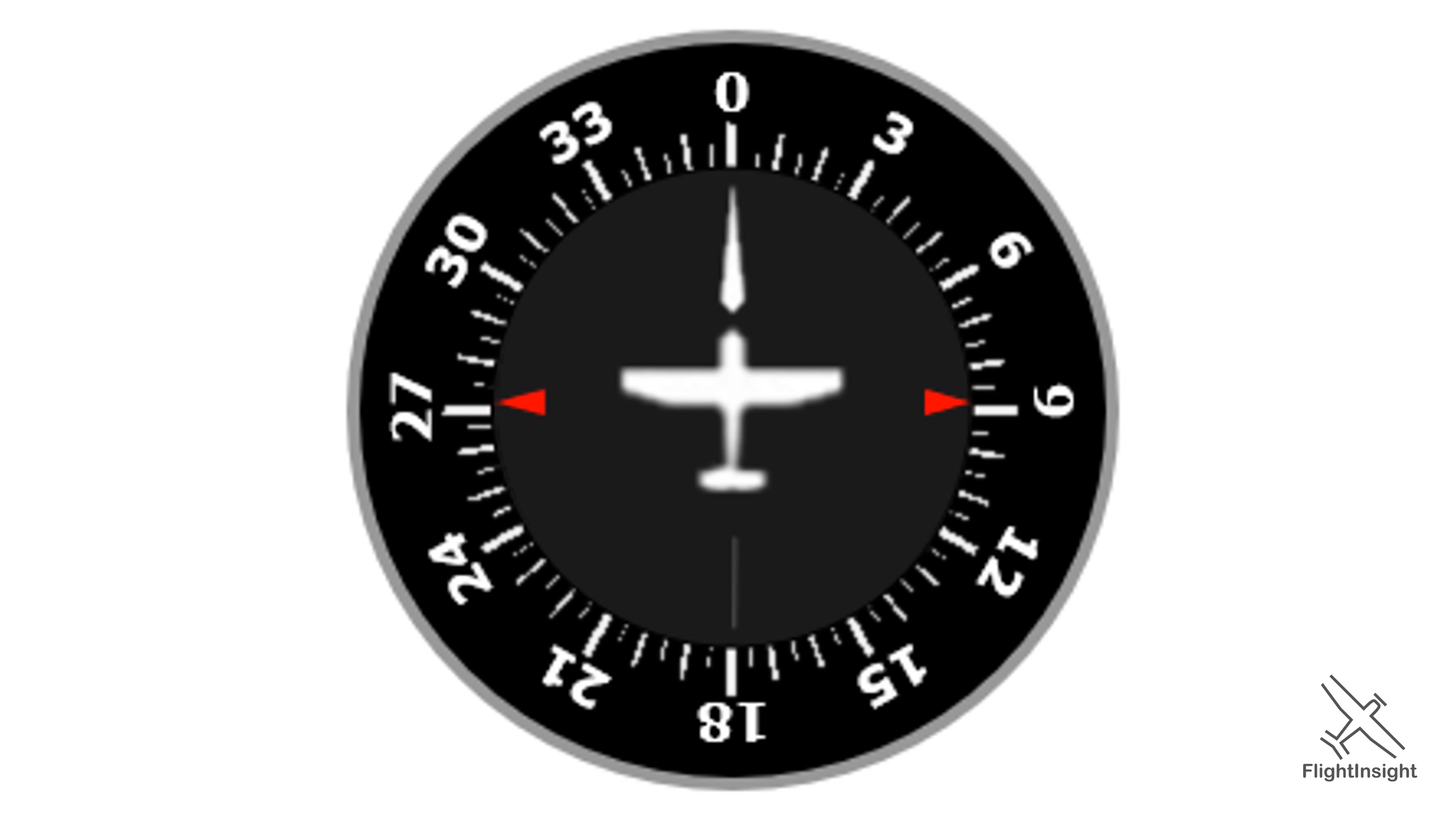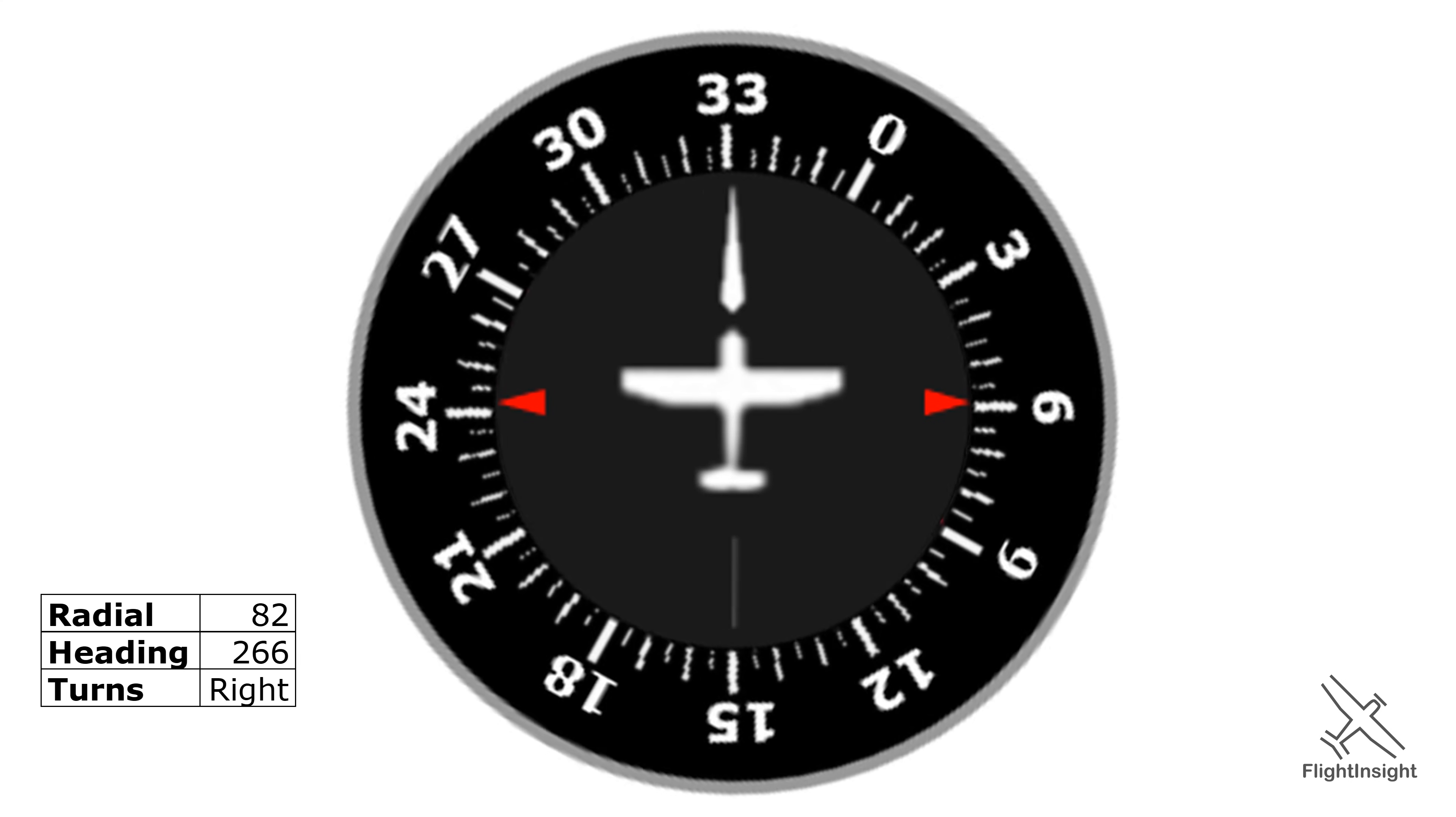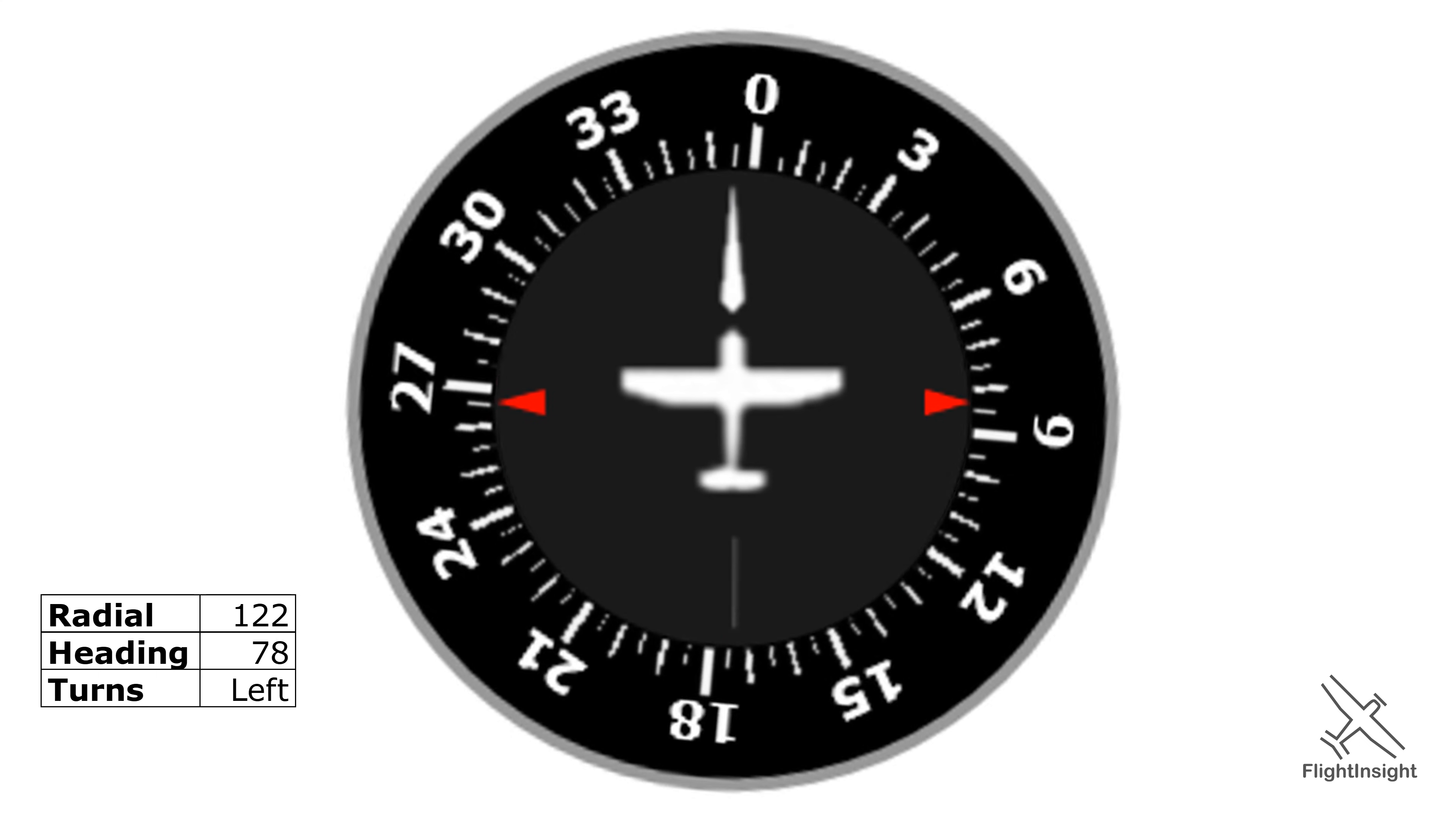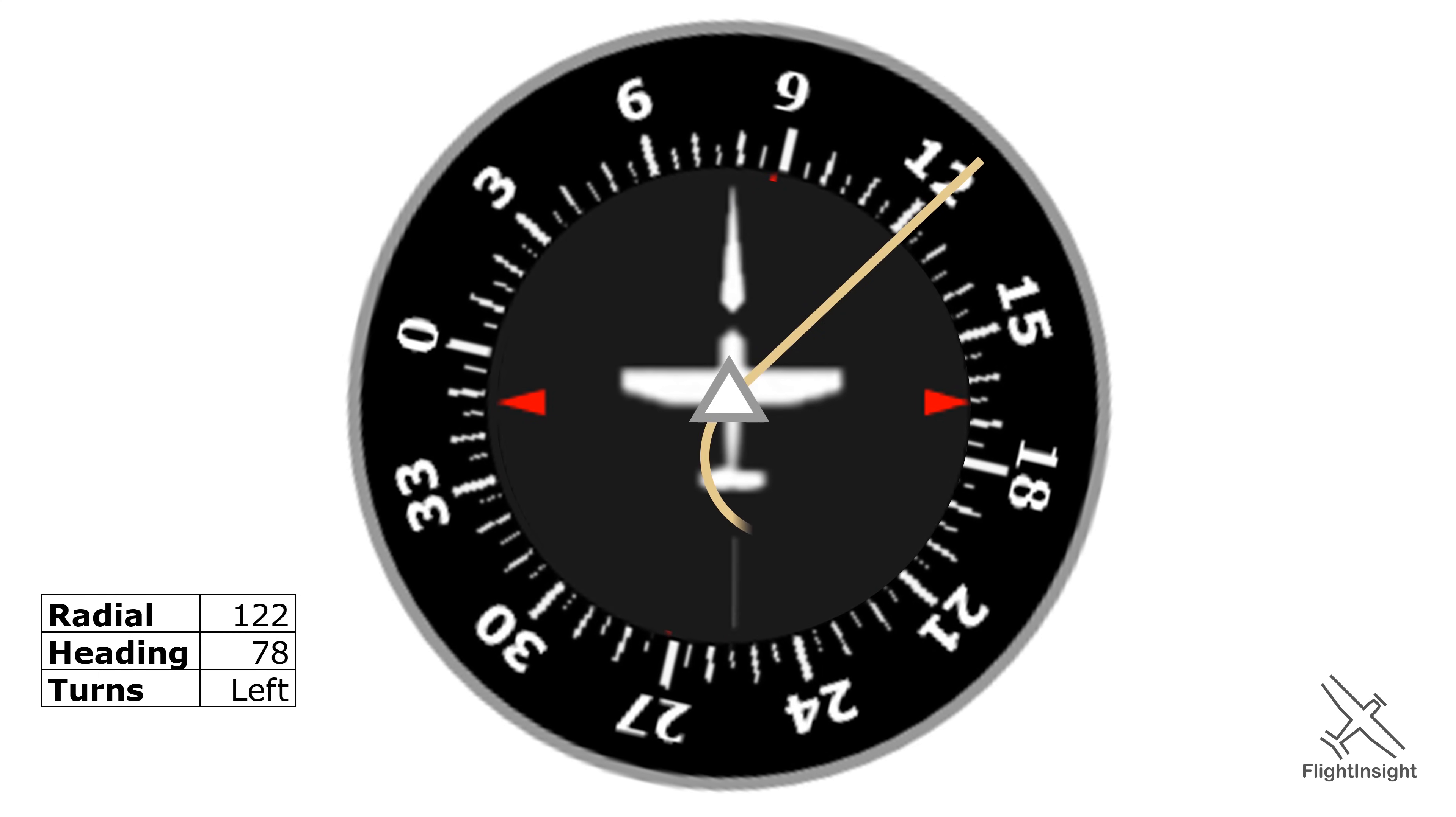My best advice is to practice these a few times until you're comfortable. Give yourself a random radial or random initial heading in either right or left turns and figure out which of these three entries work. You can even make a little random number generator to do it for you. Visualize the hold in your head, then draw it out and see how you did. After working with these a few times, I'm sure you'll have a lot less anxiety about holding pattern entries next time you're flying.